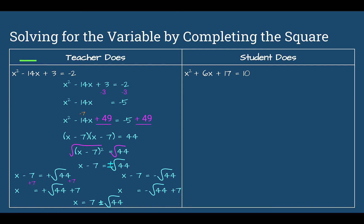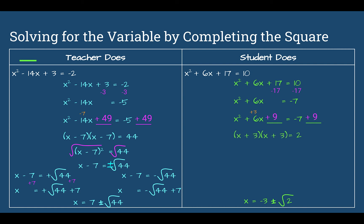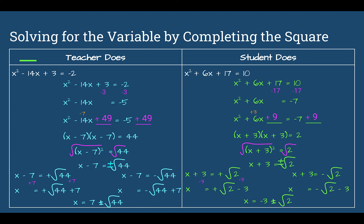Let's check. You should have got negative 3 plus or minus the square root of 2. First, subtract 17 from both sides to move it off the left. Then x squared plus 6x plus something equals negative 7 plus something. Half of 6 is 3, and 3 to the second power is 9. Add 9 to both sides: x plus 3 times x plus 3 equals 2, or x plus 3 squared equals 2. Take the square root: x plus 3 equals the square root of 2. Subtract 3 from both sides and swing it out front: negative 3 plus or minus the square root of 2.